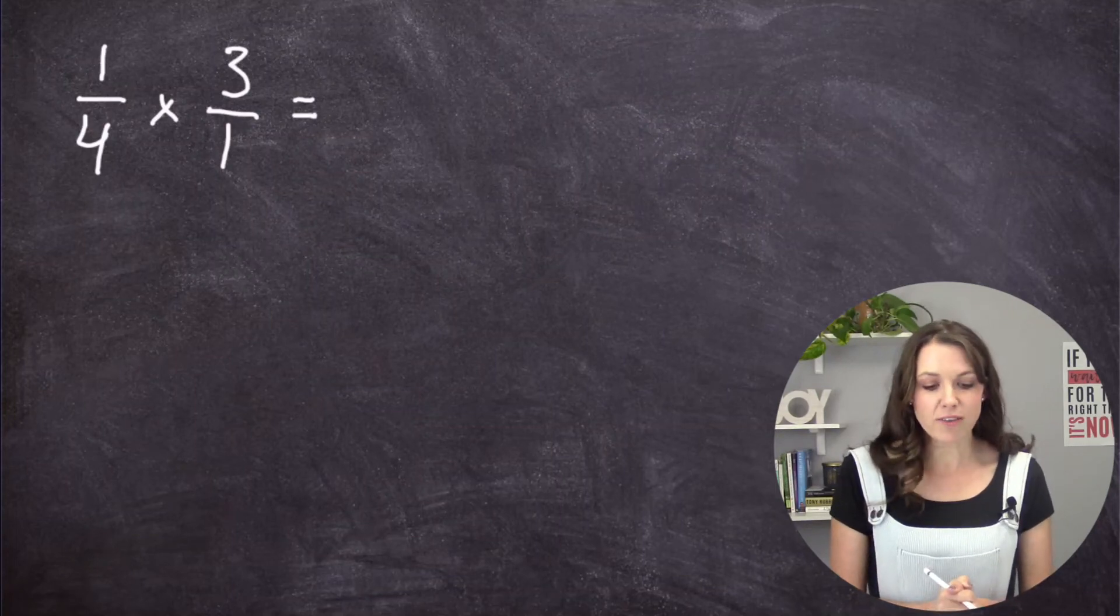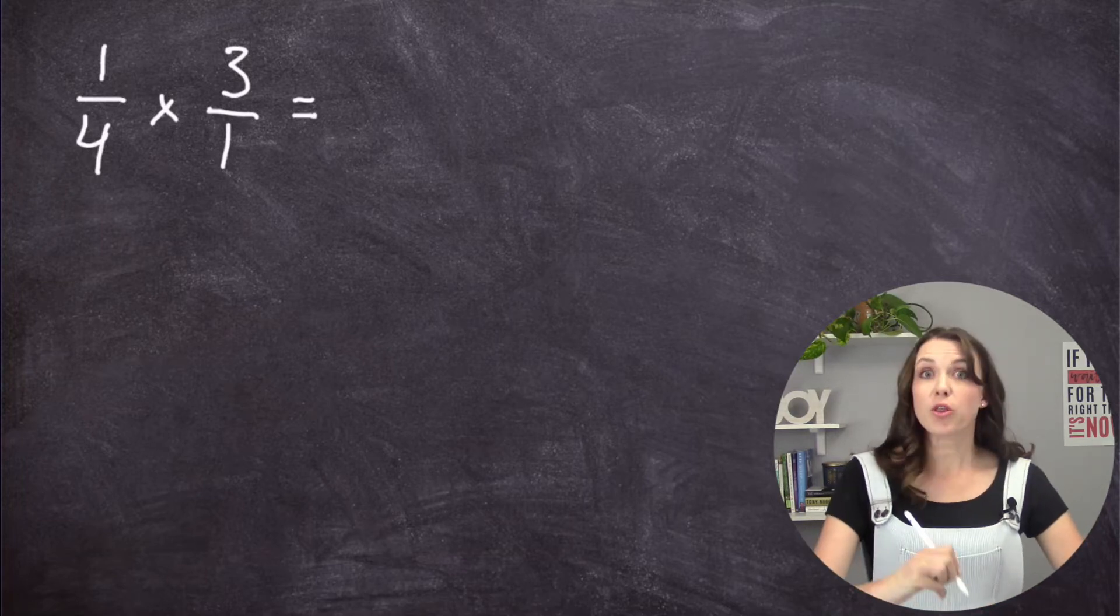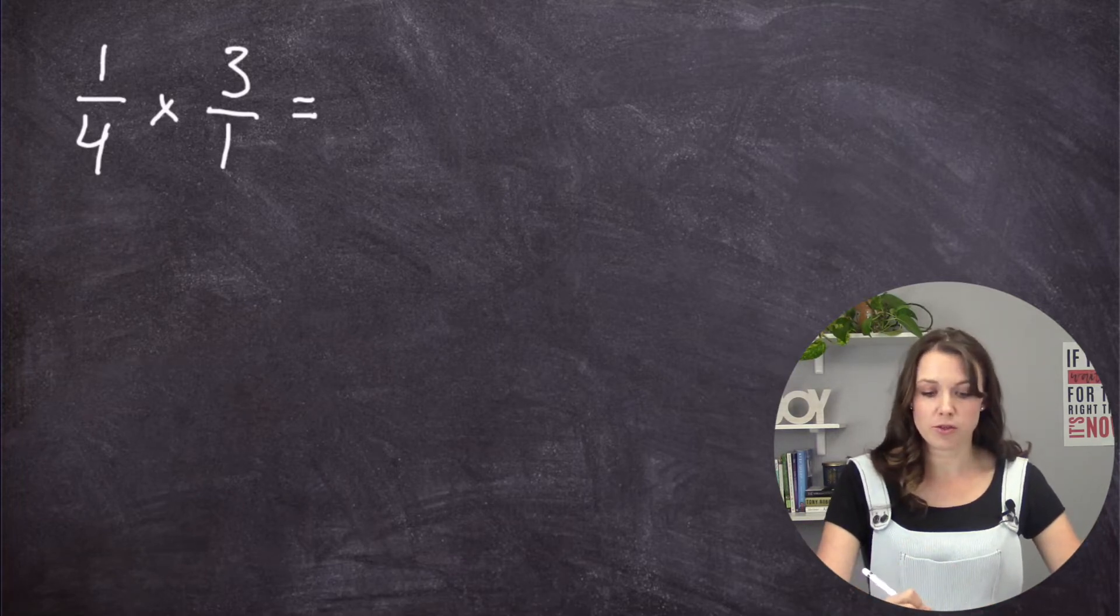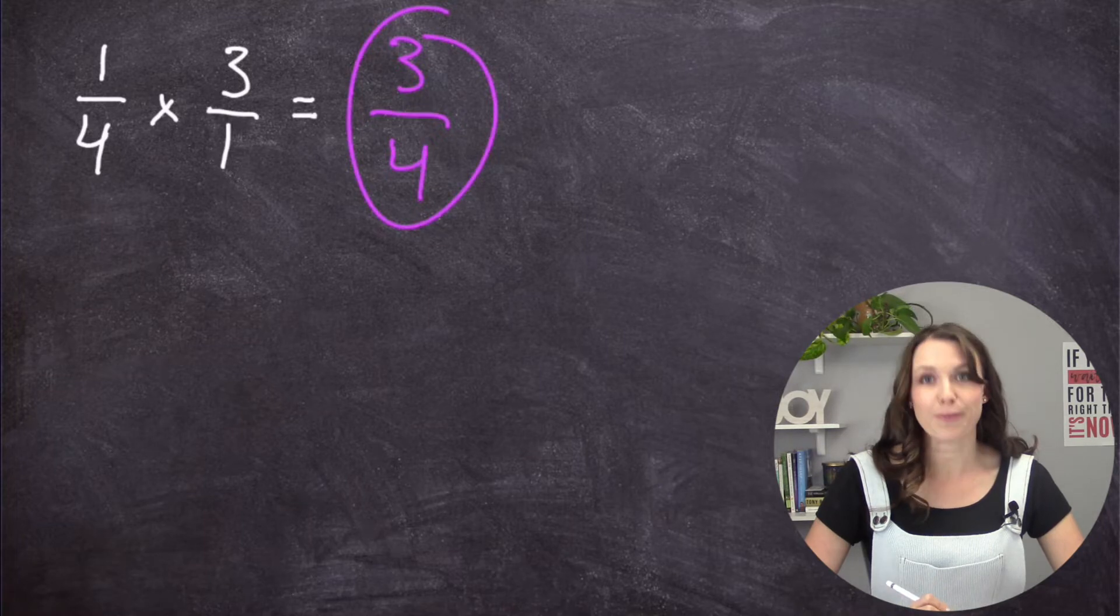So we are multiplying 1/4 times 3 over 1. So what we're going to do is just go straight across. So 3, 1 times 3 equals 3, and 4 times 1 equals 4. That's our answer, 3/4.